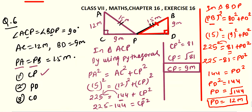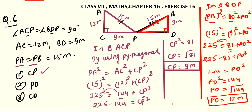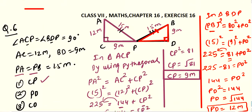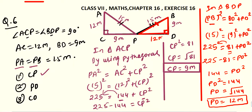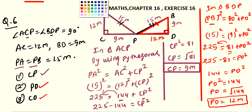You should know square roots from 1 to 30: 1 squared is 1, 2 squared is 4, 3 squared is 9, 4 squared is 16, and so on. If you know 1 to 30 squares you will not face any trouble here. So PD equals 12 meters. Now we have to find CD. From this diagram, CD is your total line segment which is the sum of CP and PD.